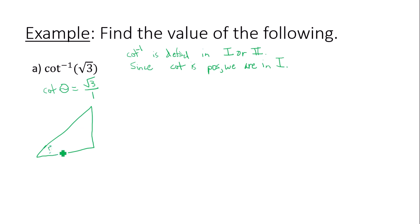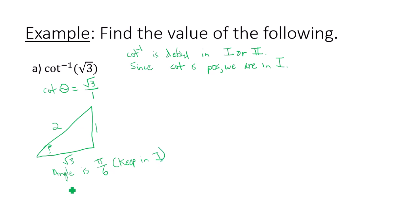We have our mystery angle — our reference angle — which is also our actual angle theta, since it will be a quadrant one angle. Cotangent is adjacent over opposite. Who is always across from the side with measure one? The angle is 30 degrees, pi over six. Since inverse cotangent is defined in quadrant one and cotangent is positive, we keep the angle in quadrant one. So theta is pi over six — the answer to my inverse trig expression is pi over six.